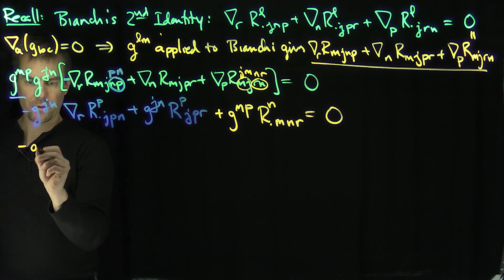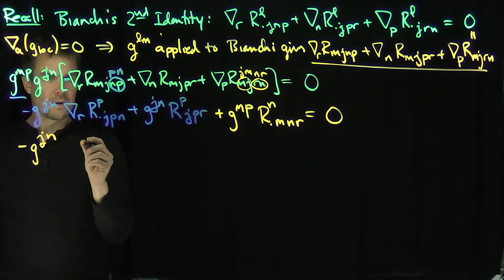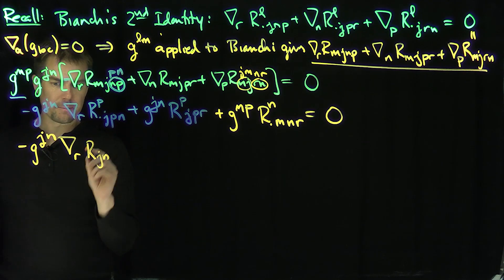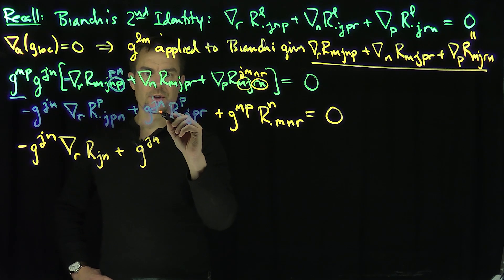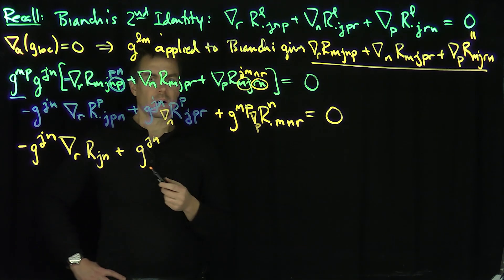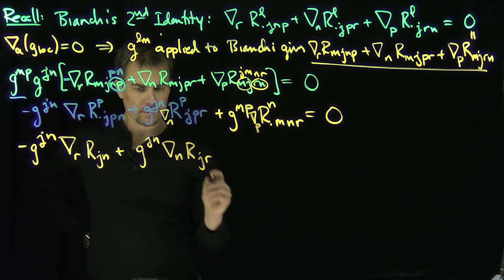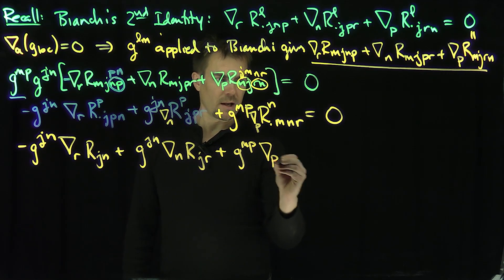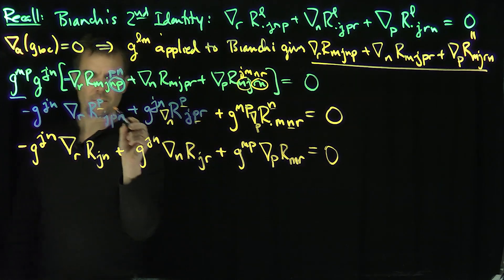One intermediate step: using G^JN on the first term gives the R-covariant derivative of the Ricci tensor Ric_JR. By definition, tracing on the second entry of these tensors gives the Ricci tensor. So we have: the N-covariant derivative of Ric_JR, plus the P-covariant derivative of Ric_MR, is equal to zero — using metric compatibility to commute the metric tensors into covariant derivatives.